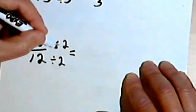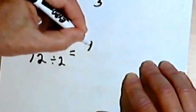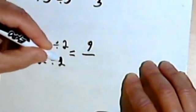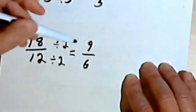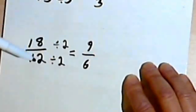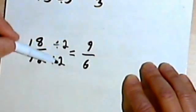When I do that, I'll get 18 divided by 2 is 9, and 12 divided by 2 is 6. Now we have to be careful, because even though I divided both the numerator and the denominator by 2, I didn't reduce this fraction to its lowest terms.